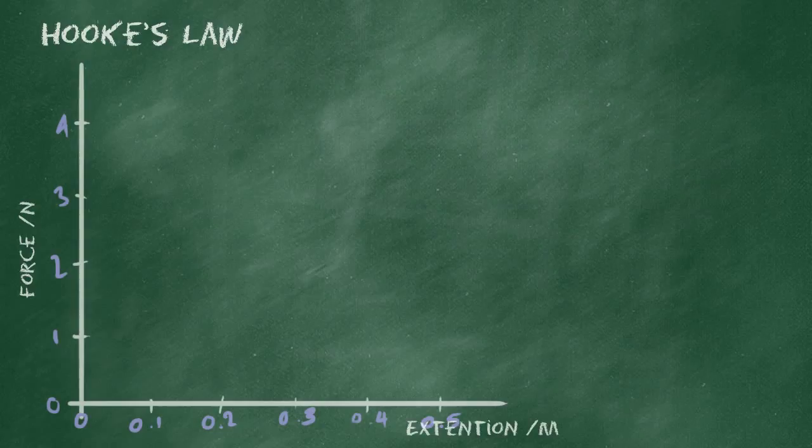You've perhaps done this experiment before. What you do is you take a spring and you clamp it in position. You measure the force you add to the spring and you measure its extension. So the first reading, the first data point, is when the force is zero and there's no extension. There's no change in shape so far. So there we go at the origin, zero newtons and zero metres.